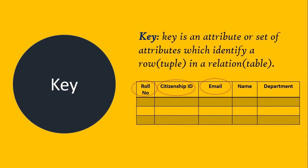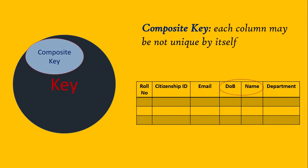If you look at this example — the student table — roll number is a key because it can identify a tuple, row, or student uniquely. Citizenship ID is a key, and email ID is another key. So all of them are different keys for this table.